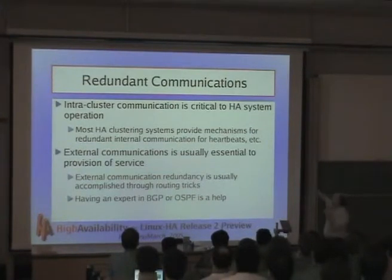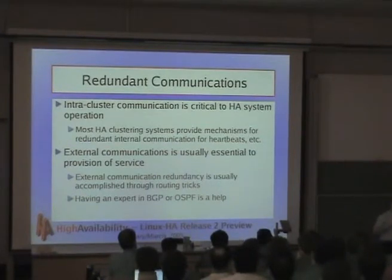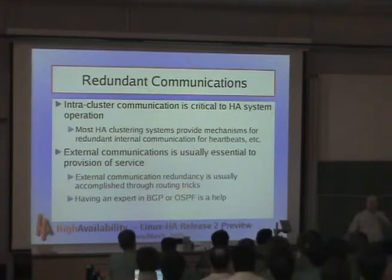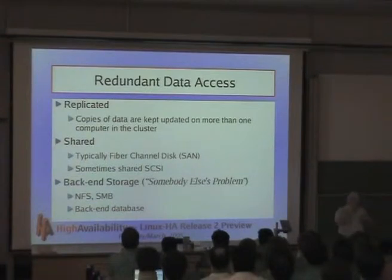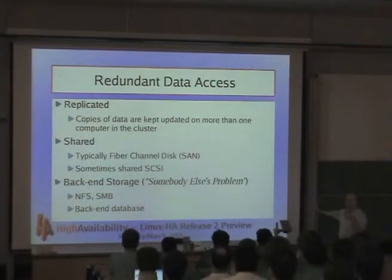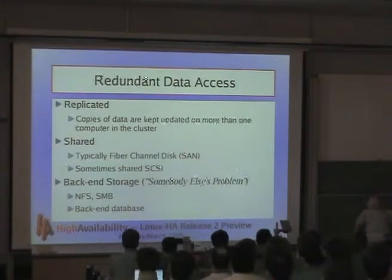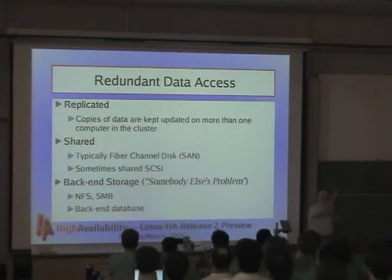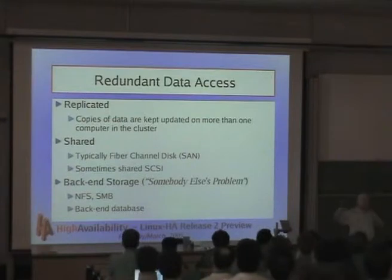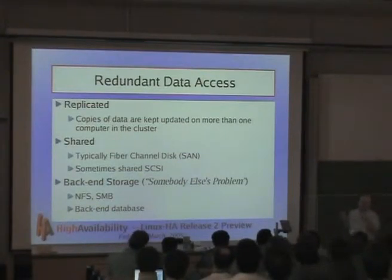External communication is also typically essential to the provision of service. Communication to the outside world is accomplished more through routing tricks — BGP or OSPF routing. You also need redundant access to your data. You can do that either through replication, sharing, or making it somebody else's problem. You can have replicated access — copy data from here to there. You can have shared data, where two machines share the same piece of data. Or you can do back-end storage, where somebody else manages availability of that service in their own way.